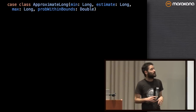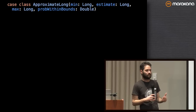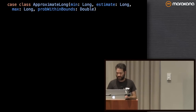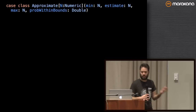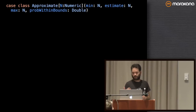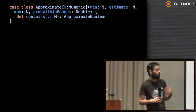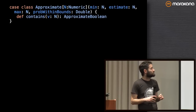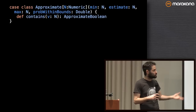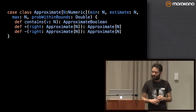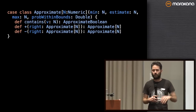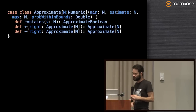We also have ApproximateLong. It encapsulates a min, an estimate, a max, and a probability that the true value is within that range. There's no reason to do this specifically for Long — we can do this for any Numeric using the Numeric type class. The most important thing we want to do with an ApproximateNumeric, apart from reading the estimate and range directly, is asking whether a certain value is within these bounds — and nicely, that returns an ApproximateBoolean. We can also add and subtract approximate numbers; you can look at the source code for the probability manipulations.